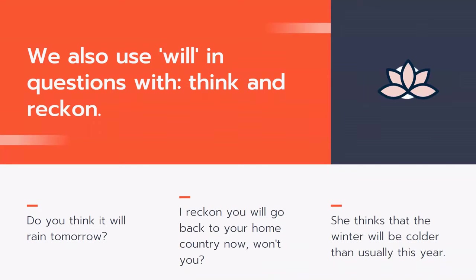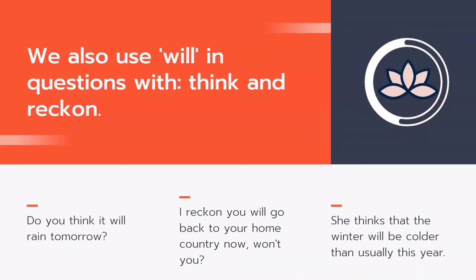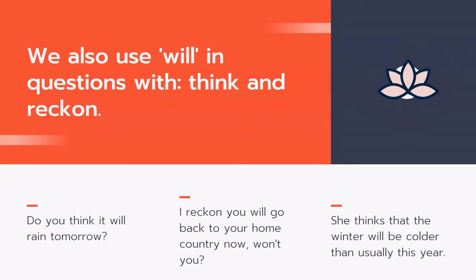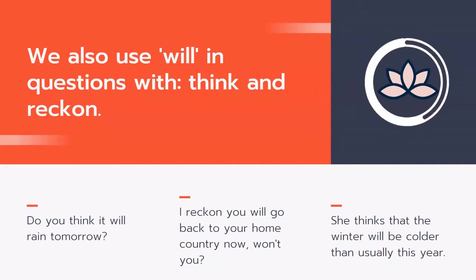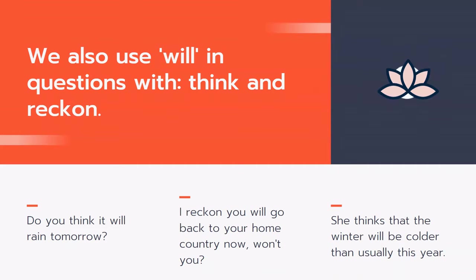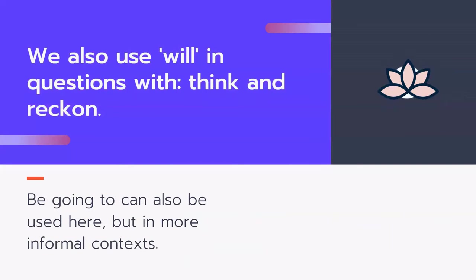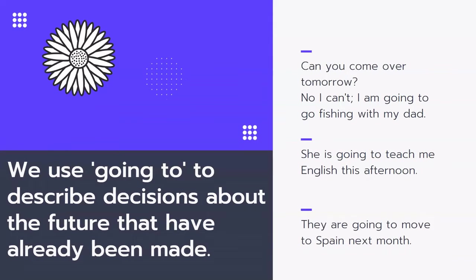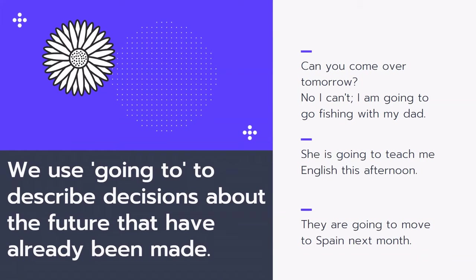We also use will in questions with 'think' and 'reckon.' For example: 'Do you think it will rain tomorrow?' 'I reckon you will go back to your home country, won't you?' 'She thinks that the winter will be colder than usual this year.' Again, we can also use going to here, but it's more informal, so I recommend using will in this situation.